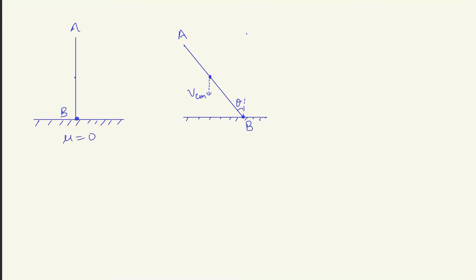At point B there are two forces: contact force in the normal direction. If friction is not here, Mg force is vertically downward. So the rod has basically two forces — one Mg vertically downward and a normal force. Since the center of mass has only vertical forces acting on it, the motion of center of mass will be vertically downward.